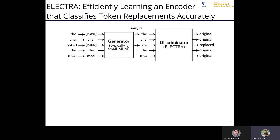Basically, what ELECTRA does is it takes a sentence — for example, 'the chef cooked the meal' — and it masks some words inside the sentence. In this example, they mask the first and the third word, 'the' and 'cooked,' and pass it through a generator, which is a neural network — typically a small masked language model — to get a prediction of the masked tokens. The first masked token prediction is 'the,' and the third masked token prediction is 'ate' instead of the actual word 'cooked.'